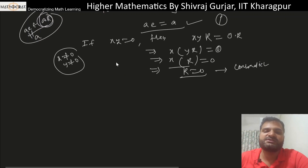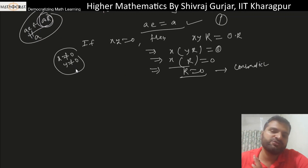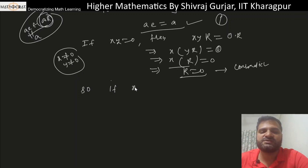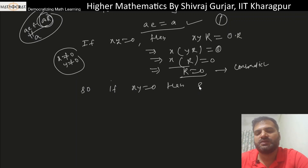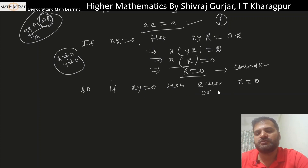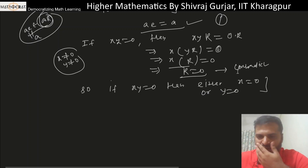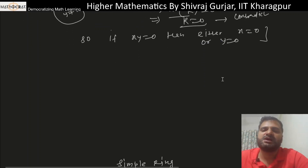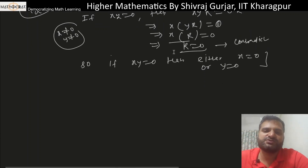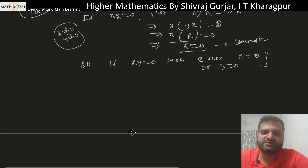So what we get is that if xy equals zero, then either x equals zero or y equals zero. This will be the case, and we will use this result going forward.